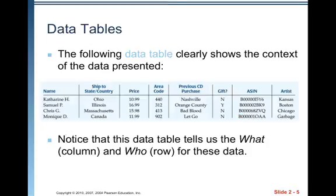The following data tables clearly show the context of the data presented. We've got the names of the individuals who are involved, the ship to state and country, the price, the area code, previous CD purchase, whether it was a gift, the ASIN numbers, and the artist. So there's a whole lot of information about that. Notice that this is a data table that tells us the what in the columns. What information do we have? We've got the names of the individuals, and that's really the who, which just forms the rows for these data.